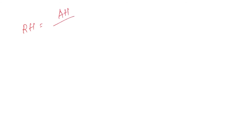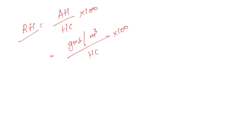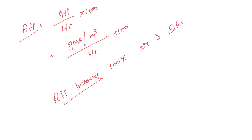Relative humidity equals absolute humidity divided by humidity capacity, multiplied by 100. Absolute humidity is the grams of water vapour present in a cubic unit volume of air, divided by humidity capacity — the amount of moisture air can hold at a given temperature — multiplied by 100, gives us relative humidity. When relative humidity becomes 100%, the air is said to be saturated.